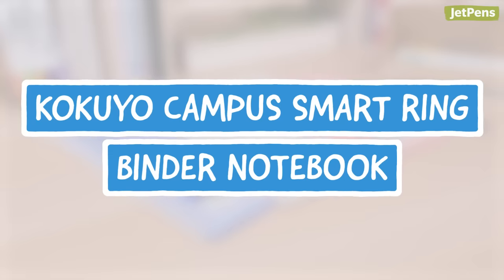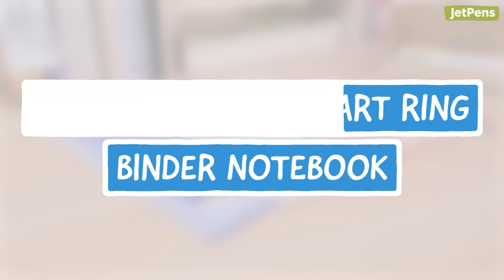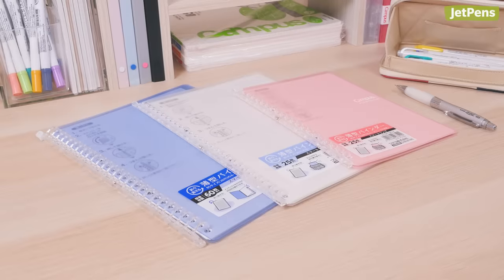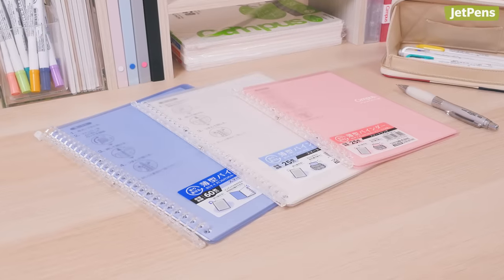Is it a binder? Is it a notebook? Is it Superman? The Kokuyo Campus Smart Ring is both. Well, a binder and a notebook.